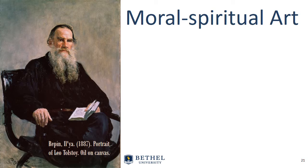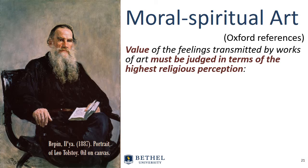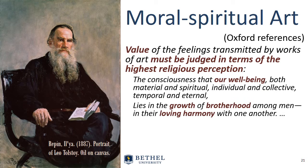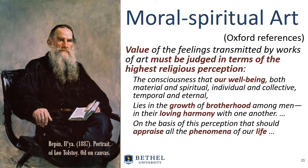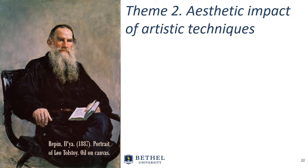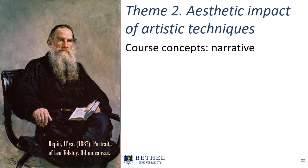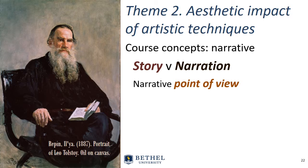These spiritual convictions affected his view of his art. Tolstoy felt that the value of feelings transmitted by art needs to be judged in religious terms. Our well-being, he says, lies in the growth of brotherhood and loving harmony, and this should be the basis on which we judge everything in life, including art. An artist conveys those feelings through artistic techniques. In our course, we've looked at narrative structure — for example, the difference between story and narration — and at narrative point of view.